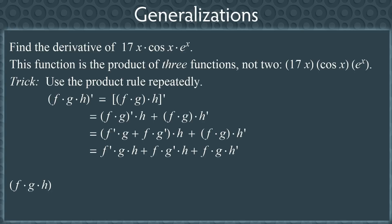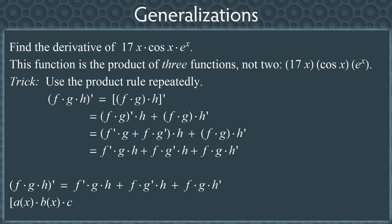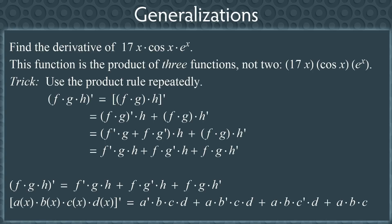The derivative of fgh equals f′gh + fg′h + fgh′. Do you see the pattern? On the right-hand side there are three terms. Each term has all three functions f, g, and h, and in each term you use the derivative of one function — first f, then g, then h. This pattern also holds for four functions: the derivative of a(x)·b(x)·c(x)·d(x) equals a′bcd + ab′cd + abc′d + abcd′. It's good practice to derive this formula yourself using the product rule three times.